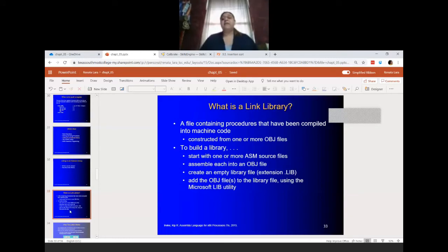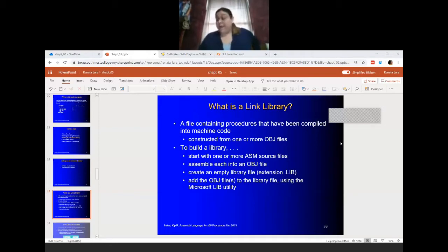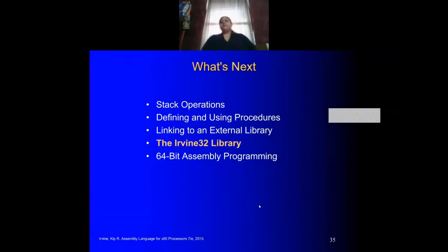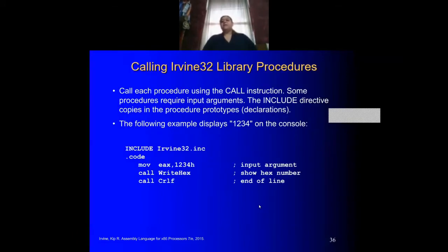So what is a link library? It's a file that contains procedures that have already been compiled and translated into machine code, so they are already ready for us to use. We could create our own library, as long as you create your source files, then your object files, and make sure you create your library extensions. The Irvine32 library has a lot of procedures that do things for us.